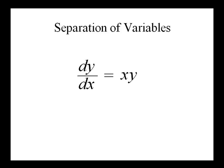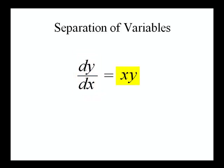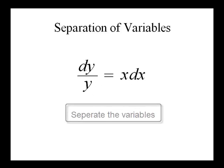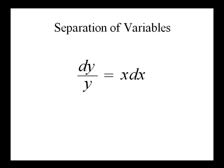The goal with separation of variables is to write all the y terms on one side and all the x terms on another — that's where the separation comes in. We can do so by dividing both sides by y and multiplying both sides by dx. We've now separated the variables.